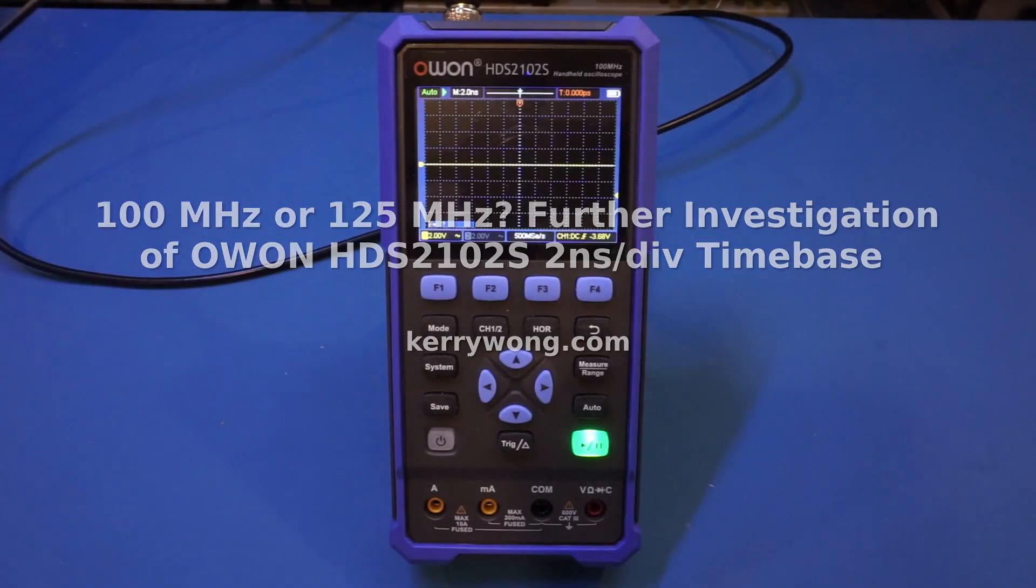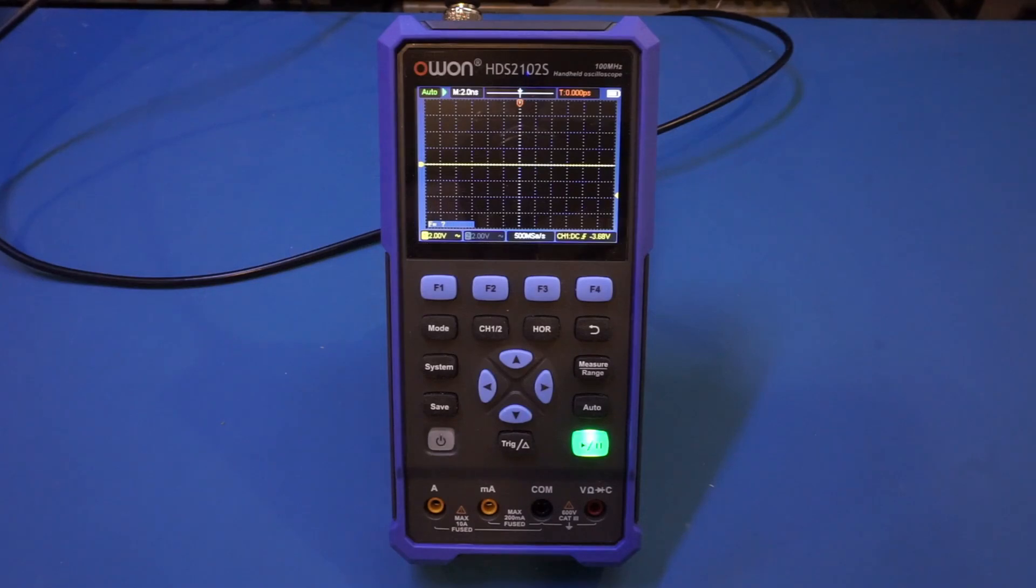Hi, in my earlier review of Owen's latest HDS21102S 100 MHz bandwidth handheld scope meter, some viewers alerted me of what seems to be an abnormality of this scope when operating in its fastest 2 ns per division time base. So in this short video, let's take a closer look to see what the deal is, as I promised I would investigate further.